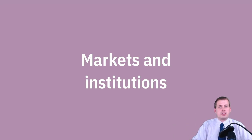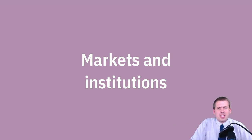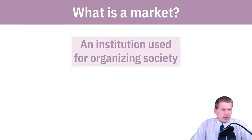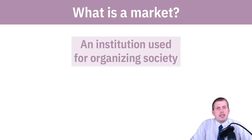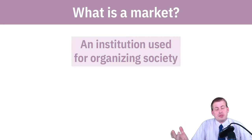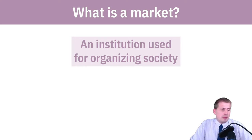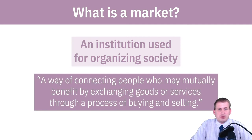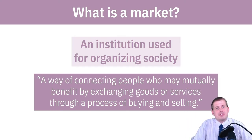So what is a market? It is an institution based on private property — it's a way of trading, exchanging, and moving property and services around between people. It's really just a way of organizing society. From the reading, it's just a way of connecting people who want to exchange goods and services and improve their lot by trading.